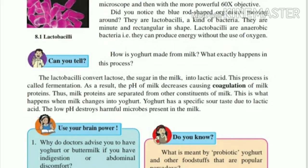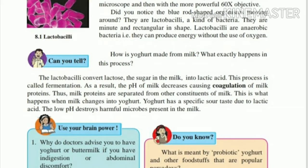The conversion of lactose into lactic acid by the bacteria Lactobacillus is called fermentation — that's the definition. As a result, the pH of milk decreases, causing coagulation of milk proteins. When Lactobacillus converts lactose to lactic acid, the pH of the milk falls.